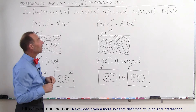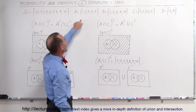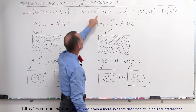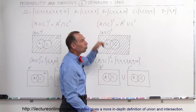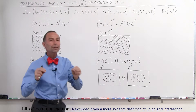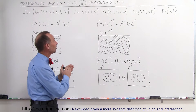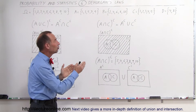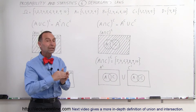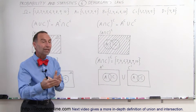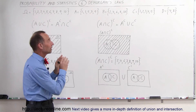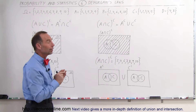Now notice that when you look at A and B, you can see that those are two completely independent events. All the elements in A do not belong to B, and all the elements of B do not belong to A. They're completely independent.